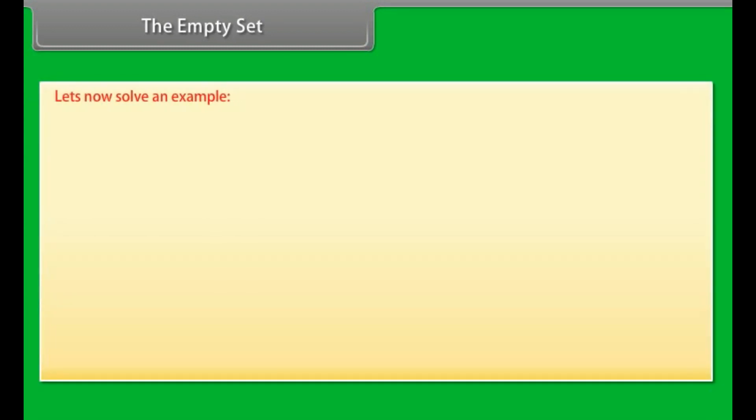Let's now solve an example. Solve |6x - 7| + 10 = 0.